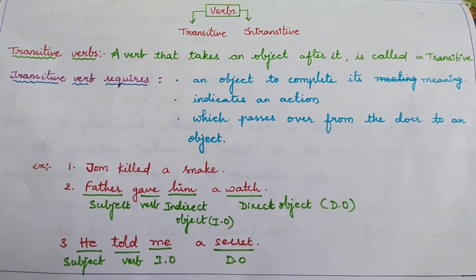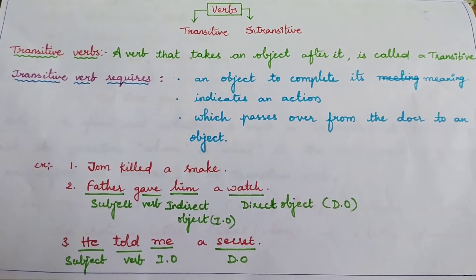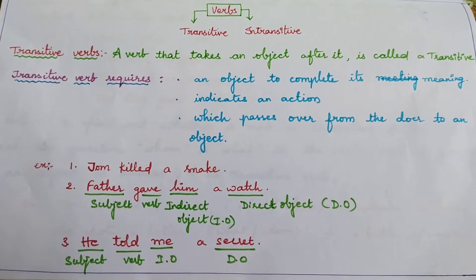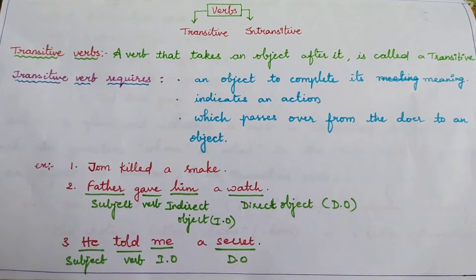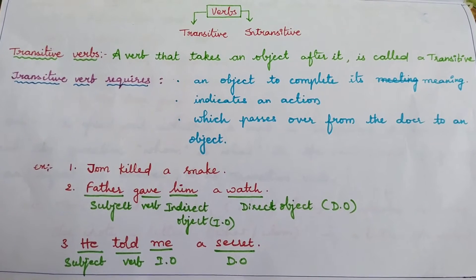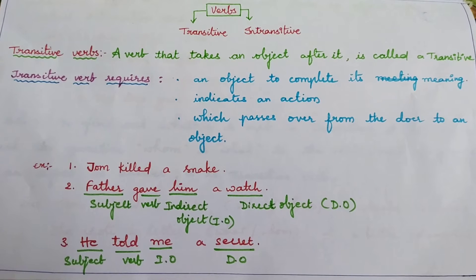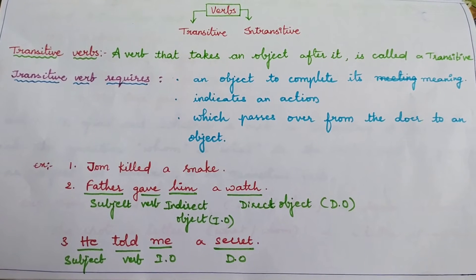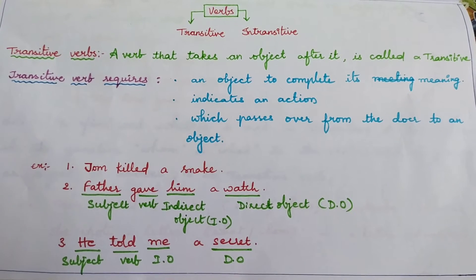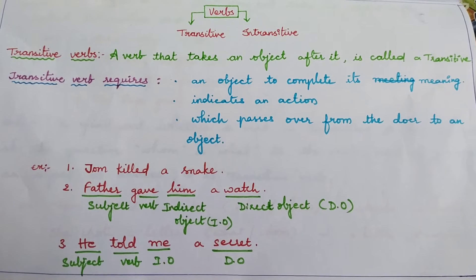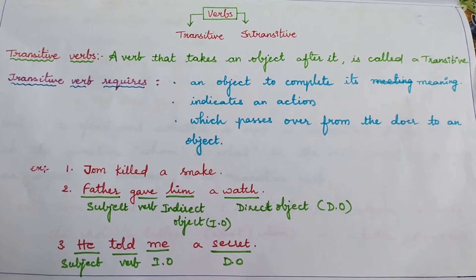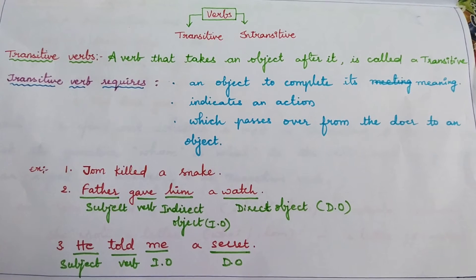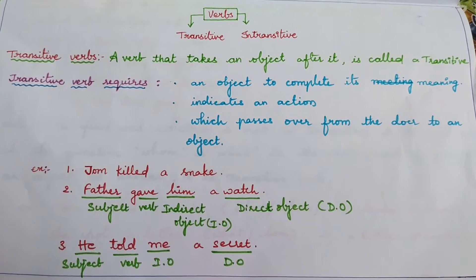To be more clear, transitive verb requires an object to complete its meaning. It needs an object to give completion for its meaning. It indicates an action. Transitive verb passes over from the doer to object.